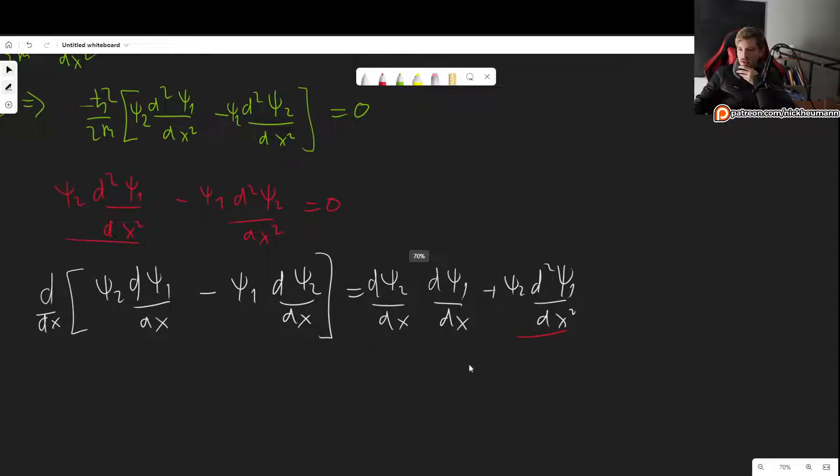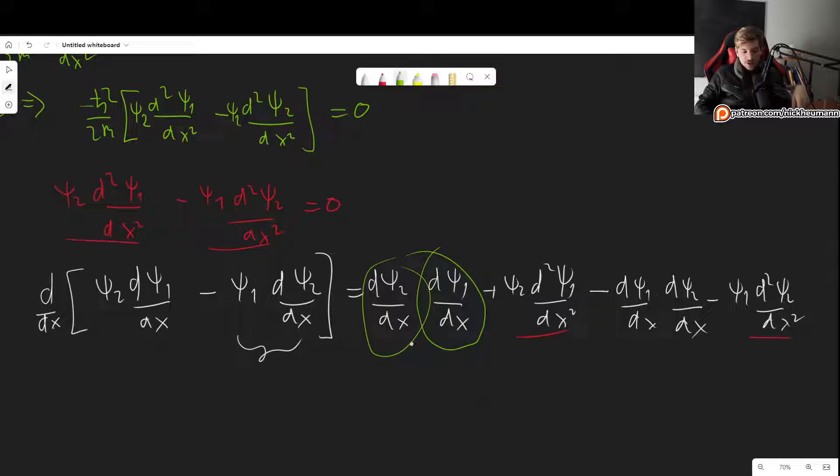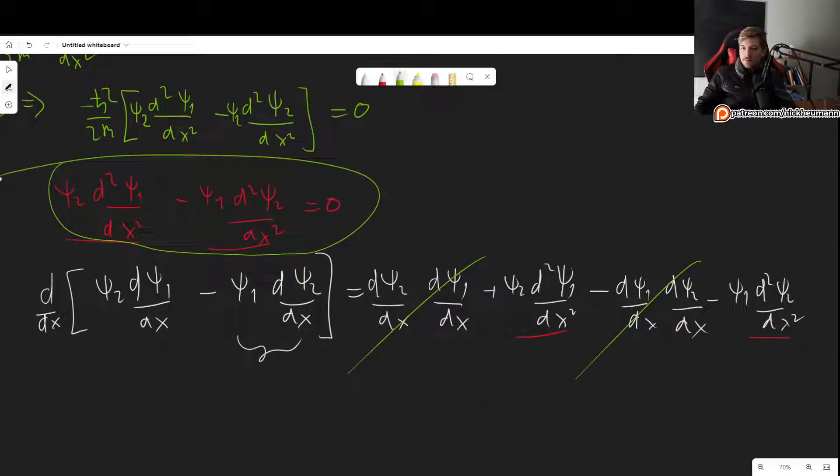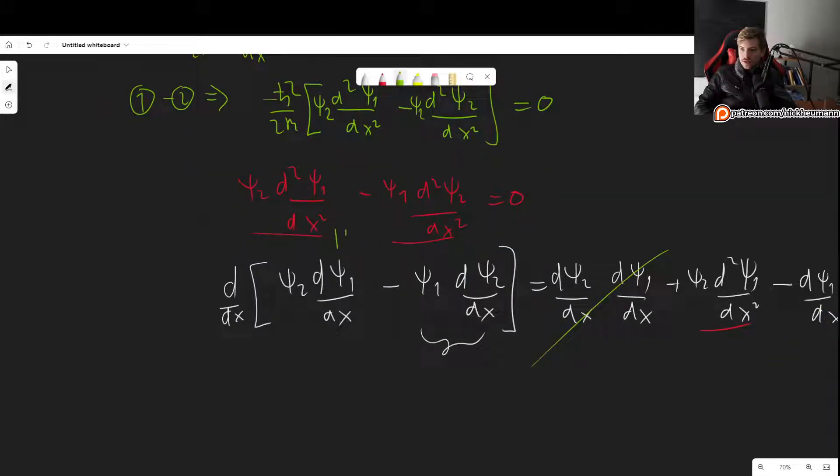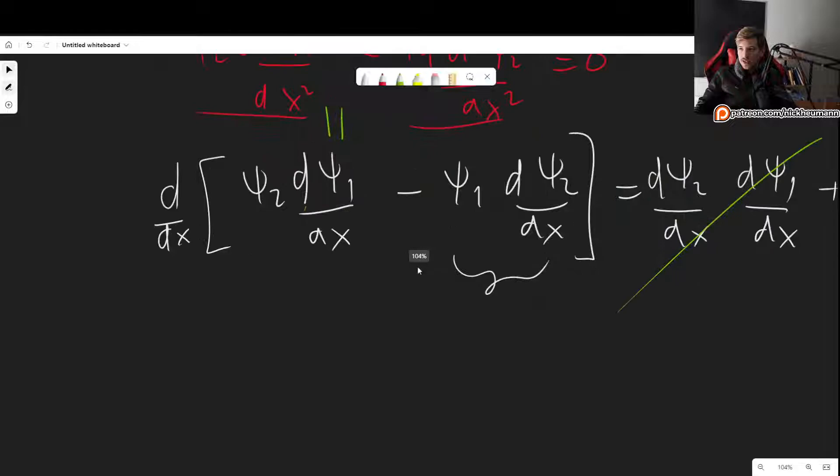Then we have another term. So from this, we get minus dψ₁/dx dψ₂/dx minus, and then we get ψ₁ d²ψ₂/dx². And that is the same as this. And notice that because these two are just scalar functions, they commute. These two here commute with these two. So this commutes with this. So that means that this cancels out this. So we get exactly the same as we had before. So that means that we can just rewrite this. These two expressions are equivalent.